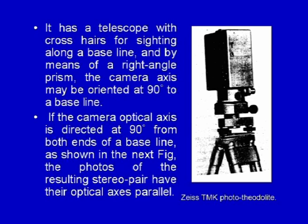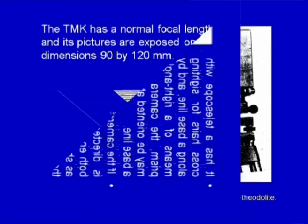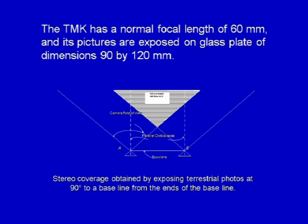If the camera optical axis is directed at 90 degrees from both ends of a baseline, the photographs of the resulting stereo pair have their optical axes parallel. The optical axis of the photo theodolite is kept perpendicular to the baseline, and the hatched area provides the region for stereoscopic vision and measurement. The TMK photo theodolite has a normal focal length of 60 mm and its pictures are exposed on glass plates of dimension 90 by 120 mm.